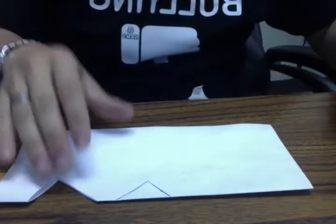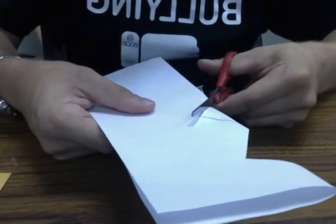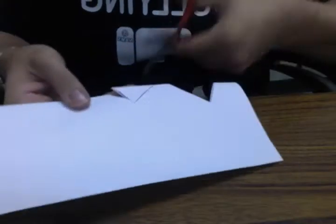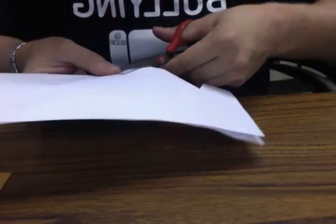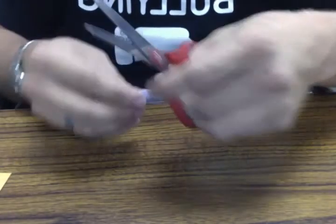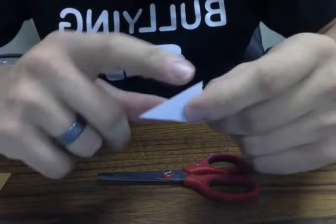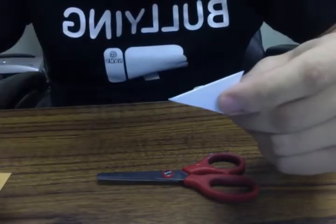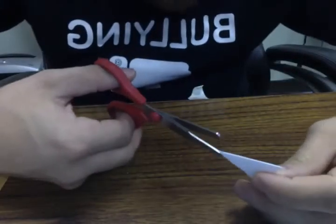And I'm going to cut out my triangle. So now I've got something that looks like this. Here's the fold. I'm going to make one tiny cut along this fold, and that's going to give me a place to put my tape.